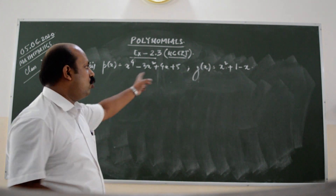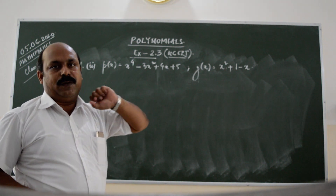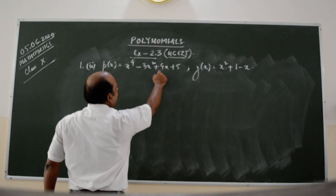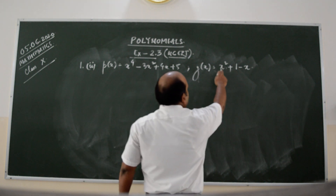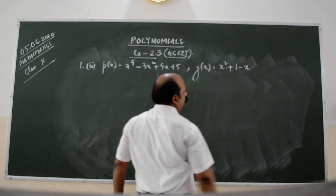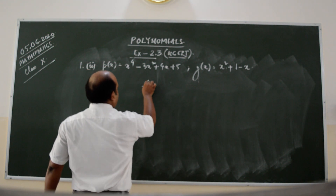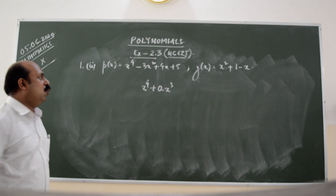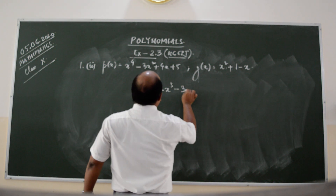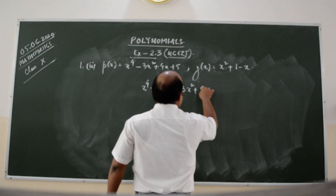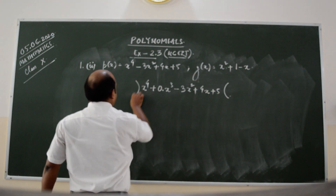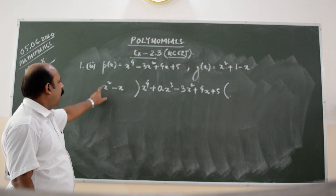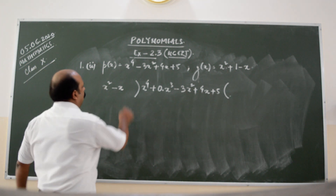When we are dividing, we should keep in mind the arrangement according to the descending order of the powers of X. X to the power 4 — there is no term involving X cubed, X squared is there, 4X is there. For G of X, we have X squared, then X and 1. So we write the dividend as X to the power 4 plus 0 times X cubed minus 3X squared plus 4X plus 5, and divide it by X squared minus X plus 1.